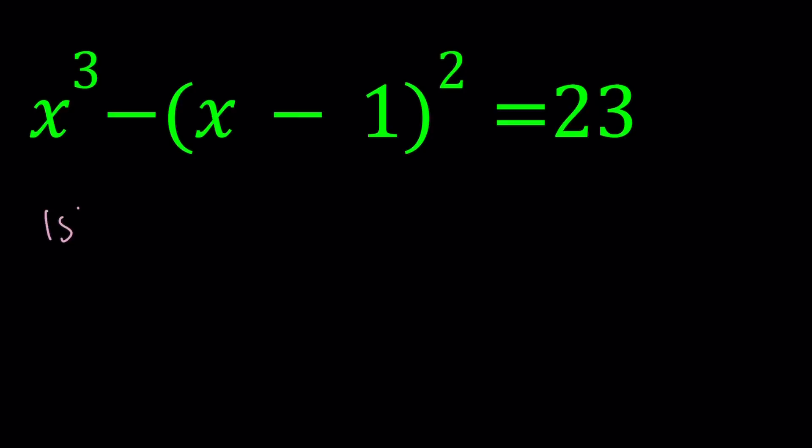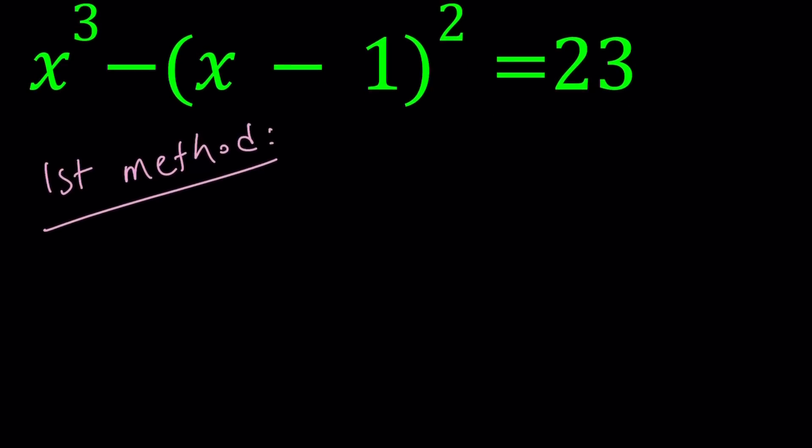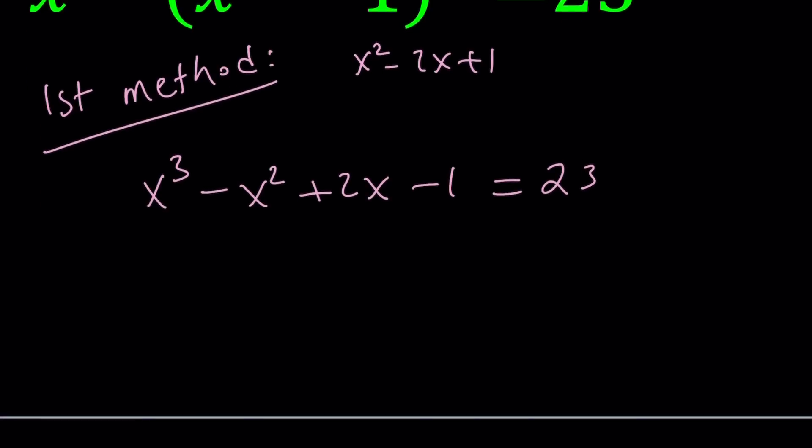So in other words, you have to have an eye for these things. Let's go ahead and talk about the first method, which will not be concluded, by the way, because you'll see in a little bit why. Let's go ahead and expand it. They gave us something in parentheses. If you expand x minus 1 squared, you're going to get x squared minus 2x plus 1.